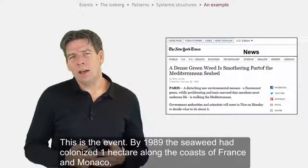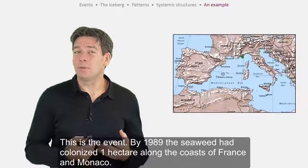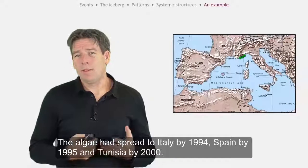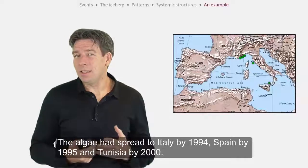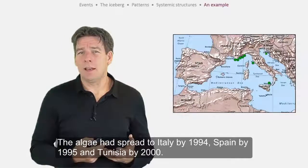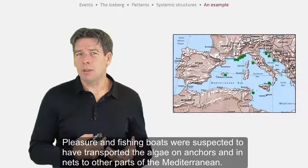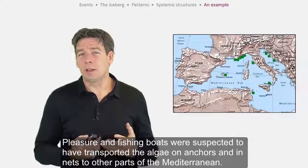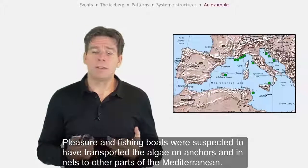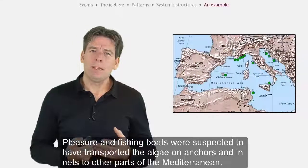By 1989, the seaweed had colonized one hectare along the coasts of France and Monaco. The algae had spread to Italy by 1994, Spain by 1995, and Tunisia by 2000. Pleasure and fishing boats were suspected to have transported the algae on anchors and in nets to other parts of the Mediterranean. Within 16 years,